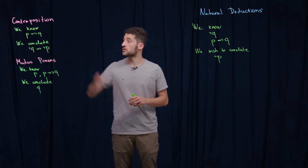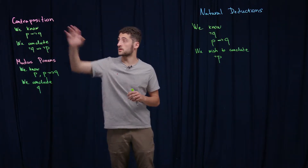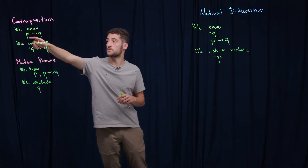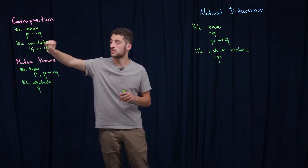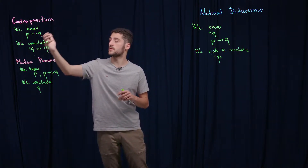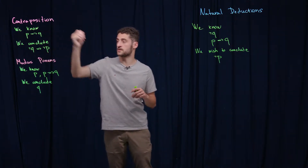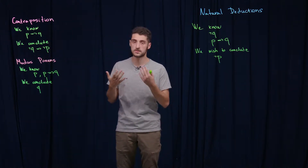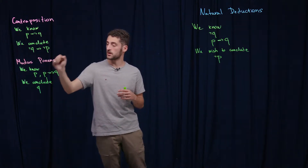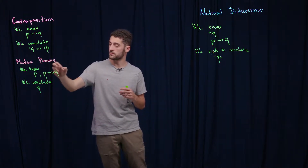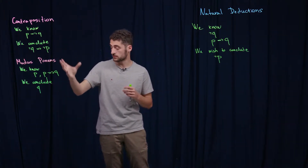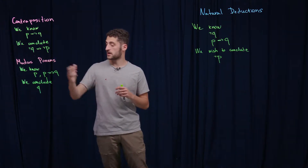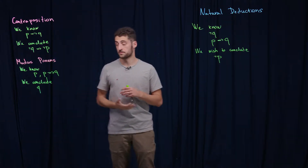In the previous video we proved the contraposition argument. We proved that if you know that p implies q, you can derive that not q implies not p. We also proved modus ponens: if you know p and you know that p implies q is true, then you can conclude that q is also true.